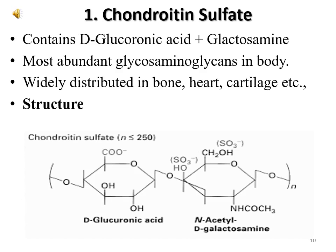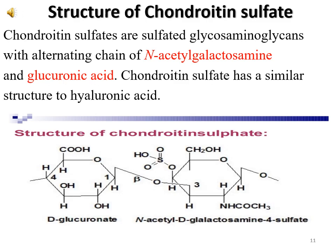Chondroitin sulfate contains D-glucuronic acid and galactosamine. It is the most abundant glycosaminoglycan in the body and is widely distributed in bone, heart, and cartilage. D-glucuronic acid combines with N-acetyl-D-galactosamine to produce chondroitin sulfate. In this structure, carboxylate ion groups and sulfate ion groups are also present.